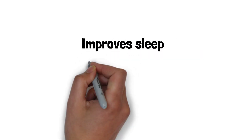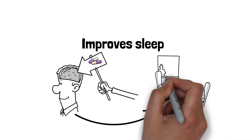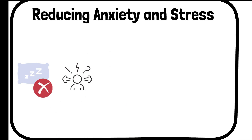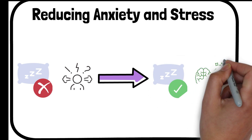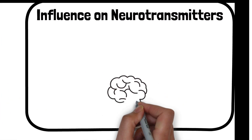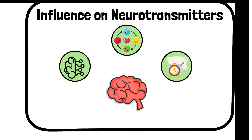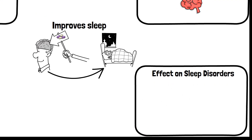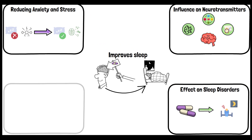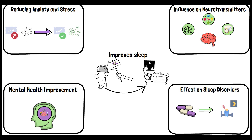Inositol plays a role in improving sleep quality by regulating neurotransmitters and reducing anxiety and stress, resulting in falling asleep faster and waking up refreshed. It has been studied for its effects on reducing anxiety and stress, which are common factors that disrupt sleep, and by alleviating these symptoms, inositol helps improve sleep quality. Inositol also plays a role in the functioning of serotonin, which is involved in regulating mood and sleep. Some studies have explored its role in treating insomnia, showing a positive impact.